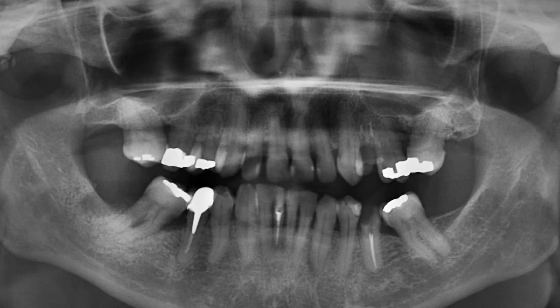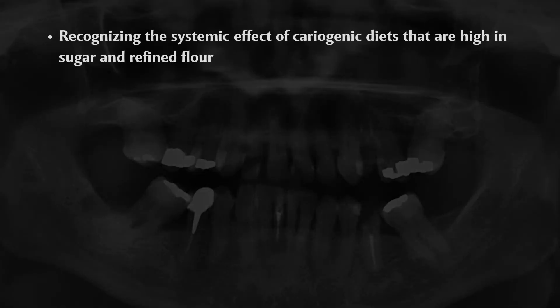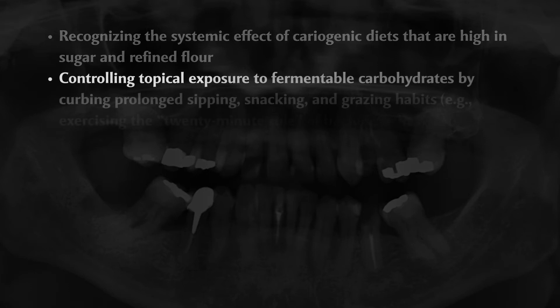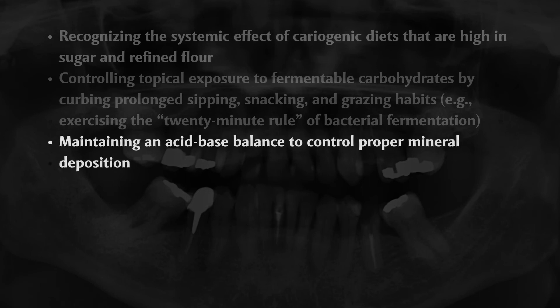Good general health and good general nutrition for the prevention of dental caries includes recognizing the systemic effect of cariogenic diets that are high in sugar and refined flour, controlling topical exposure to fermentable carbohydrates by curbing prolonged sipping, snacking and grazing habits — that is, exercising the 20-minute rule of bacterial fermentation — and maintaining an acid-base balance to control proper mineral deposition.